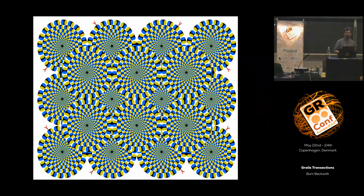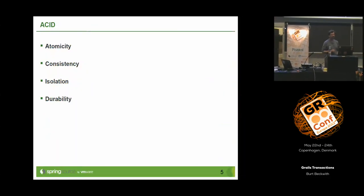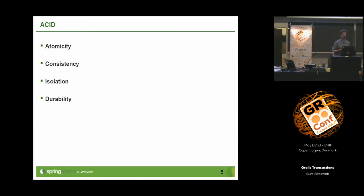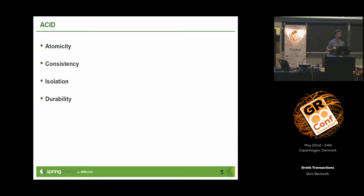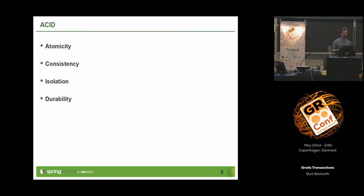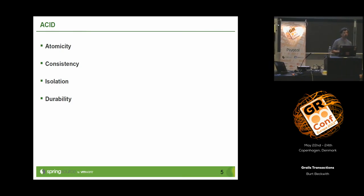Before we talk about transactions in Grails, we have to talk about ACID. ACID is an acronym: Atomicity, Consistency, Isolation, and Durability. Atomicity is really what we all tend to think of when we think of transactions — it's the all-or-nothing thing. You do a couple of inserts and some deletes, and either they all succeed or they all fail — it's an atomic work group.